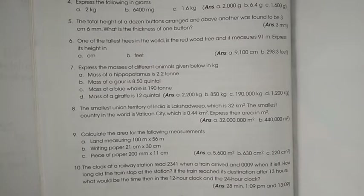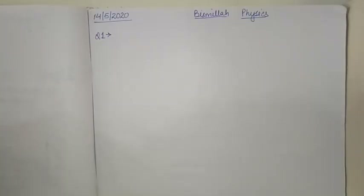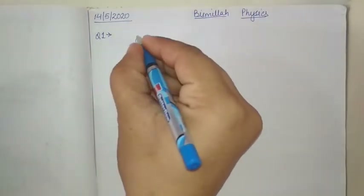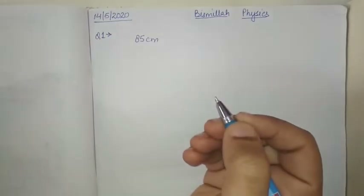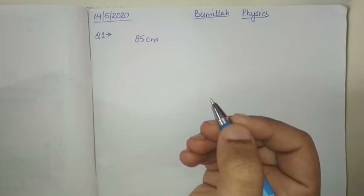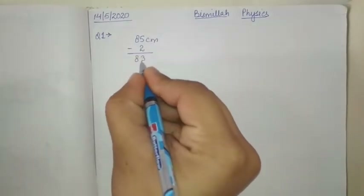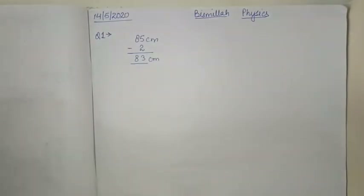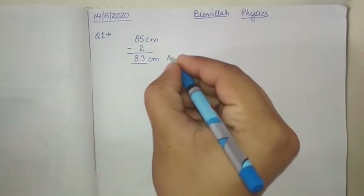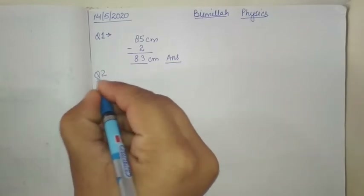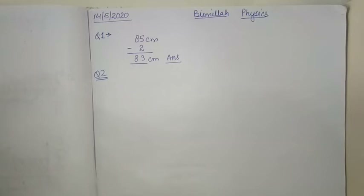The first question: while measuring the length of a table, Mariam used a meter scale which is chipped off at one end, so it starts from 2 centimeter. The scale gave the reading as 85 centimeter. What is the length of the table? As mentioned, she starts from 2 centimeter, so you subtract 2 from 85, and you get 83 centimeter. That is the length of the table.